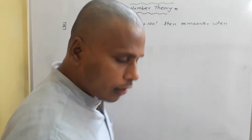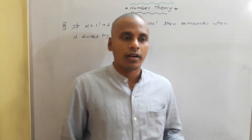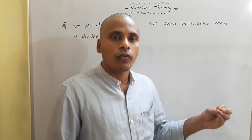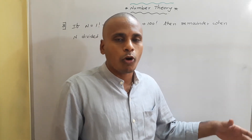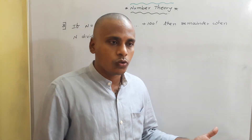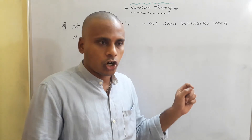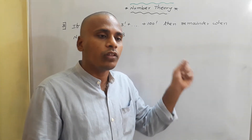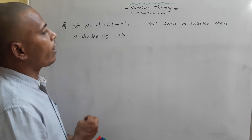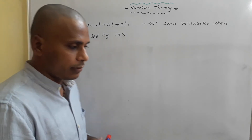The third problem: N equals 1! + 2! + 3! + ... + 100 factorial. Find the remainder when N is divided by 168. Here I am mentioning one concept for each problem. For this problem, we need two conceptual ideas: Concept 3 is about remainders when adding numbers, and Concept 4 is about factorials.